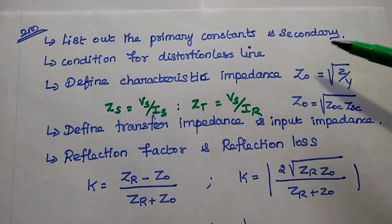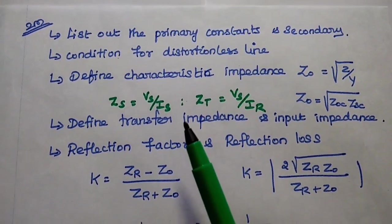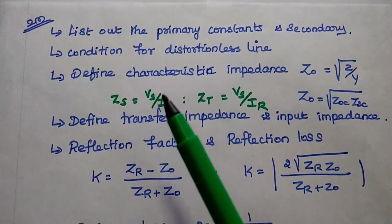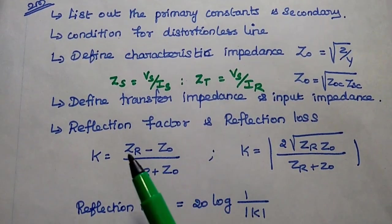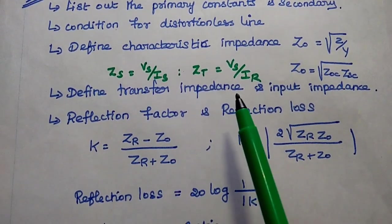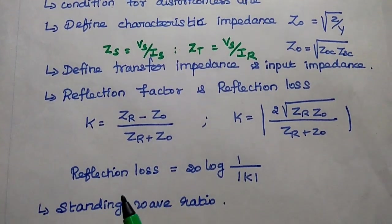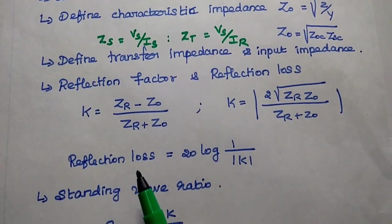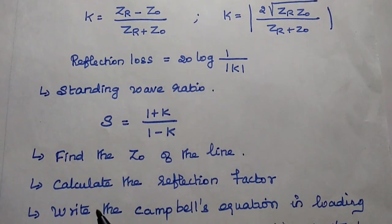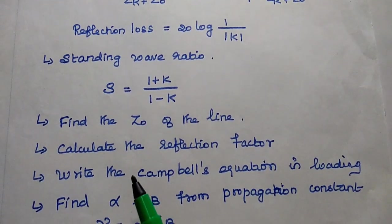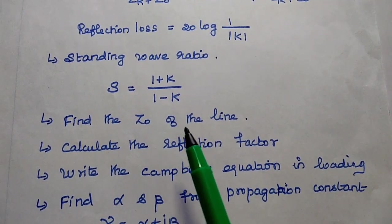Next, two more important questions in this first unit: list out the primary constants and secondary constants of the transmission line and their relation; condition for distortionless line; define the characteristics impedance, transfer impedance, and input impedance. These are general definitions. Also define the reflection factor, reflection loss, and standing wave ratio. Apart from these, we can expect two more problems — to find the characteristics impedance of the line.